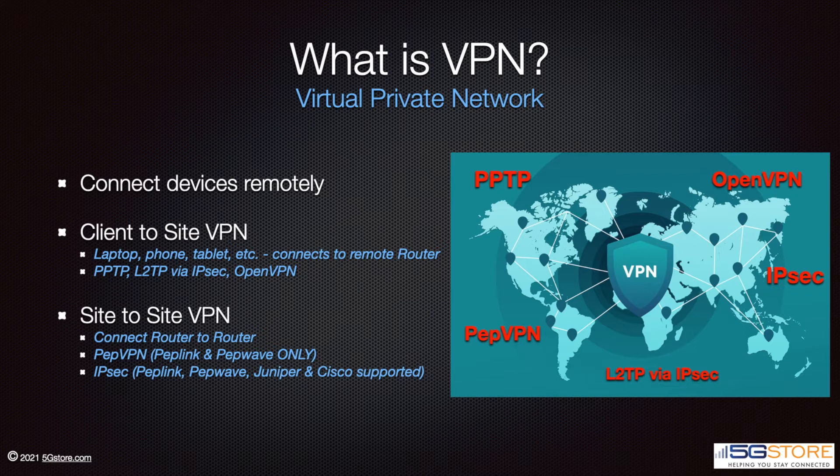When it comes to VPN connections, there are two types the Peplink hardware supports. One is considered a client-to-site connection and one is considered a site-to-site connection. Client-to-site means you are connecting a personal device, such as your cell phone, tablet, or laptop, to a router at a remote location. Our personal device is the client and the site, or server as it's sometimes referred, is our Peplink router. In the case of a site-to-site VPN connection, this is a connection between two or more routers.